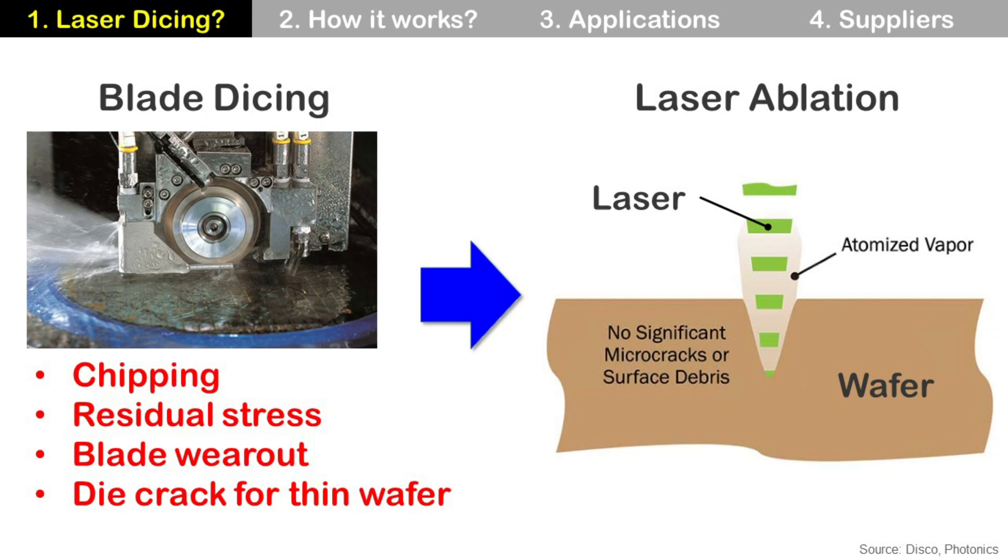As I said, most cases people use blade dicing because it is cheap and effective for most cases. So people only use laser ablation for special cases, typically for thin wafer or low-K wafer. And this process is more expensive than blade dicing.